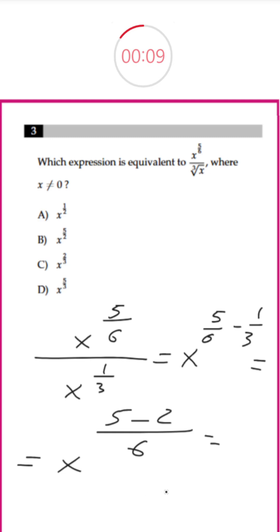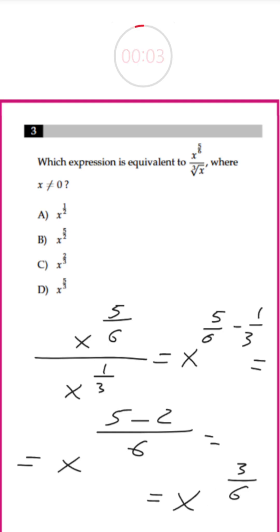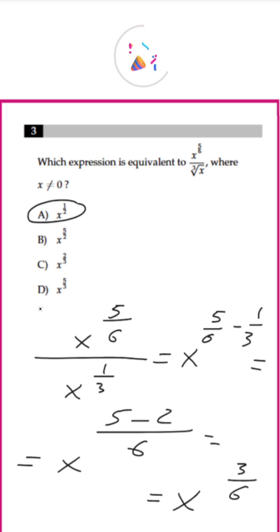We have x to the power of 3 over 6, which can be further simplified to x to the power of 1 over 2. So the answer is going to be A.